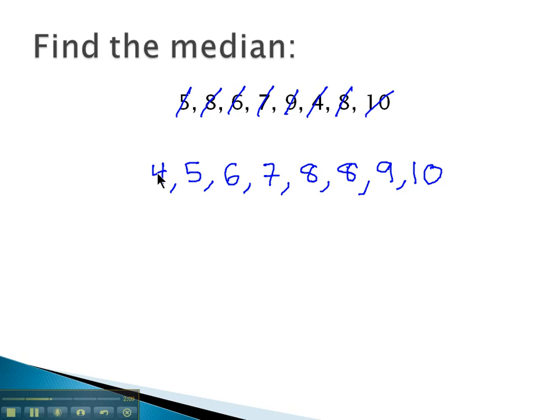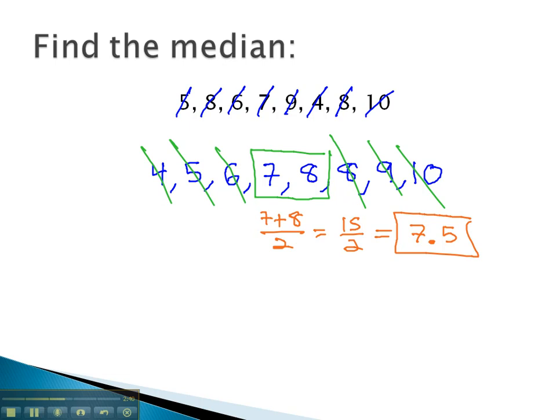Now we want the middle value, so we might cross one off of each end, and then cross one off of each end again, and then cross one off of each end again, and what we find is there are two numbers that are technically in the middle. What we do in this case is we'll calculate the mean of those two numbers by adding them together, and then dividing by 2. 7 plus 8 is 15, and when we divide by 2, we get the value 7.5. 7.5 is the value at which half of the numbers are greater now, and half of the numbers are smaller than this middle value, this average, this median of 7.5.